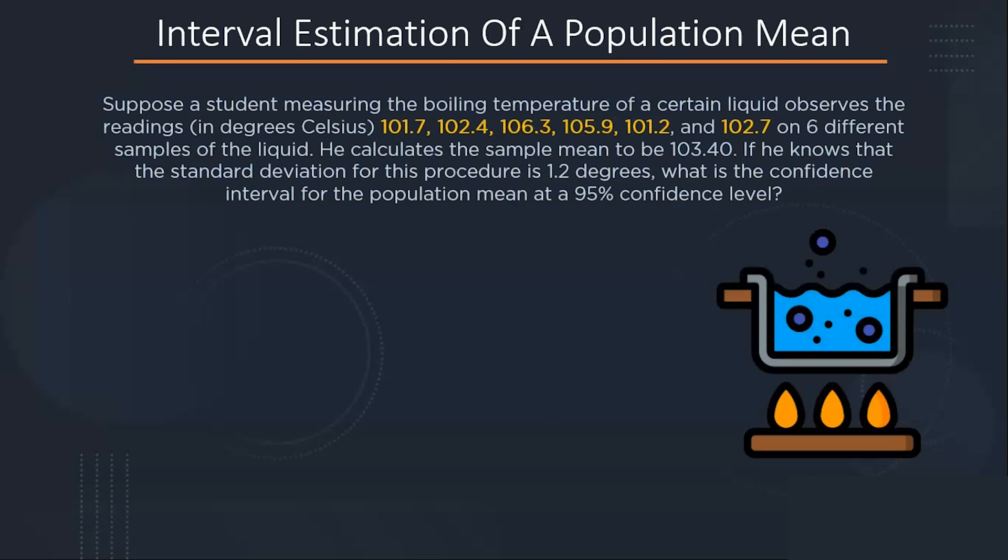Suppose a student measuring the boiling temperature of a certain liquid observes the readings on six different samples of the liquid. He calculates the sample mean to be 103.4 and if he knows that the standard deviation of this procedure is 1.2 degrees, we have to calculate the confidence interval of the population mean at a 95% confidence interval.